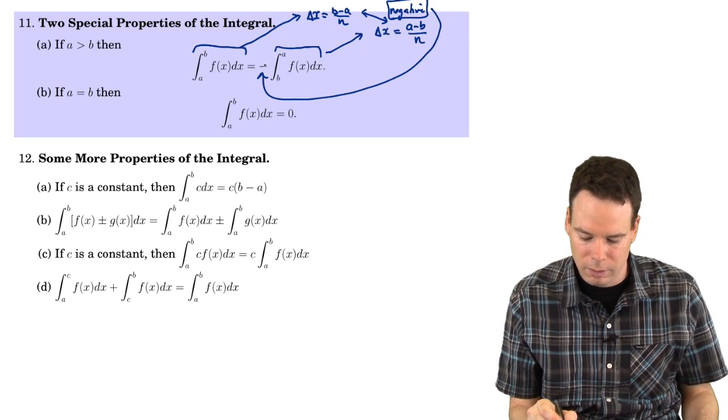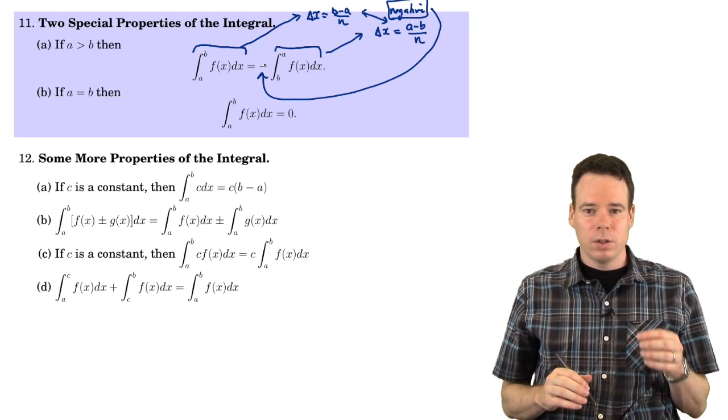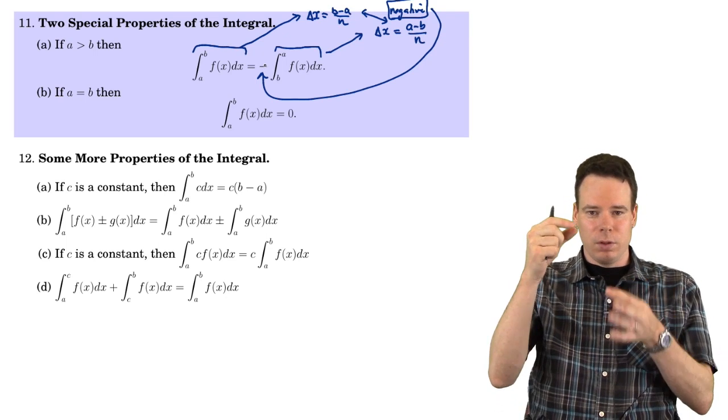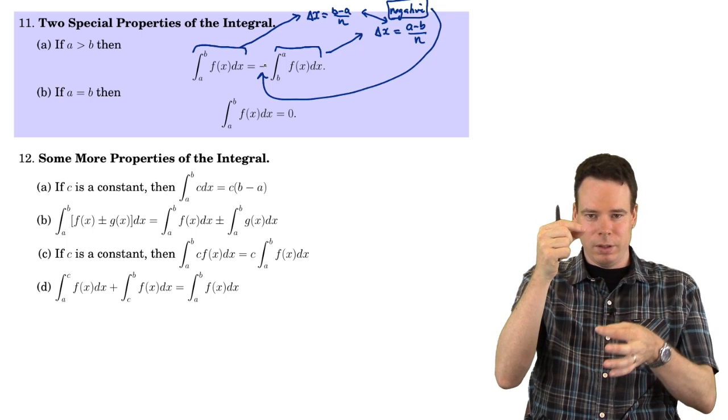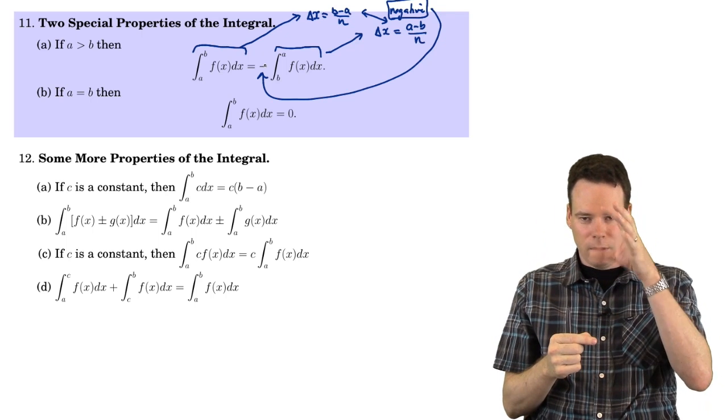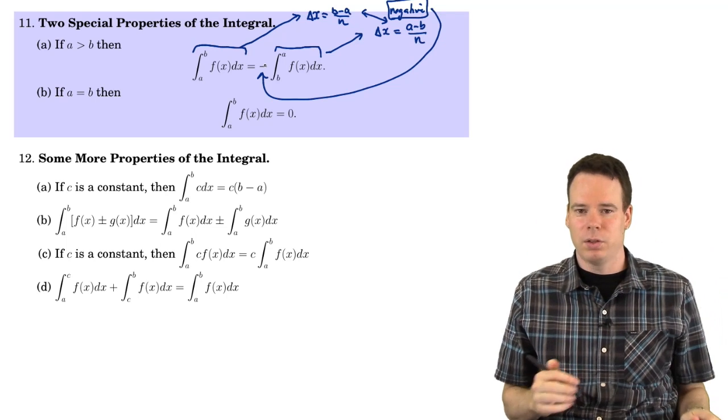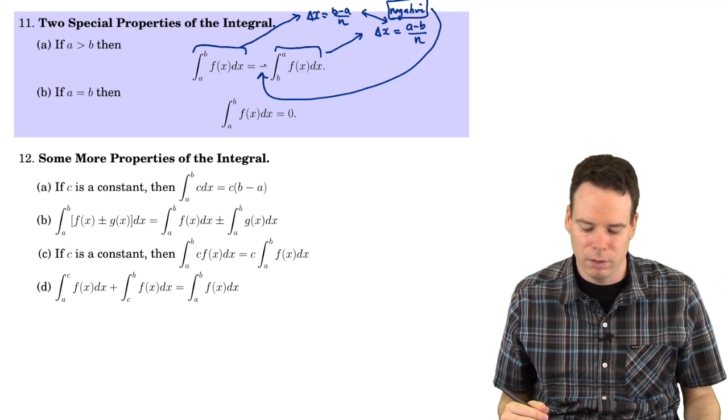So that's where the negative sign is. If your lower limit is bigger than your upper limit, you switch them and you just have to add an extra negative sign out front of the integral.